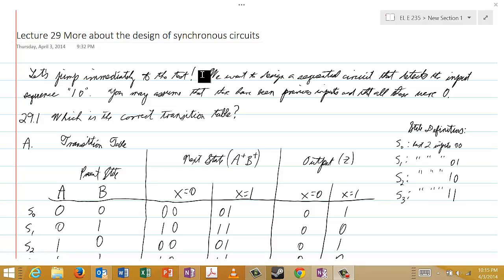Well now, in this test, we want to design a sequential circuit that detects the input sequence 10. So again, what we mean there is that we want to output a 1 if and only if the two most recent inputs form the sequence 10. And at all other times, we want to output a 0.